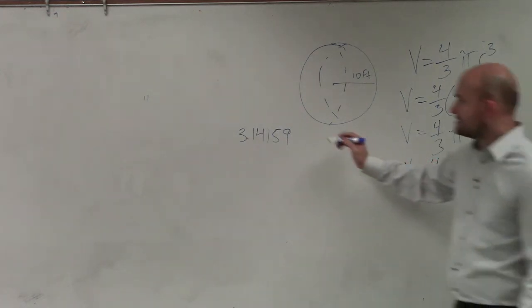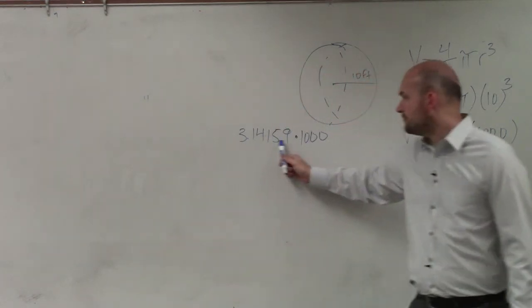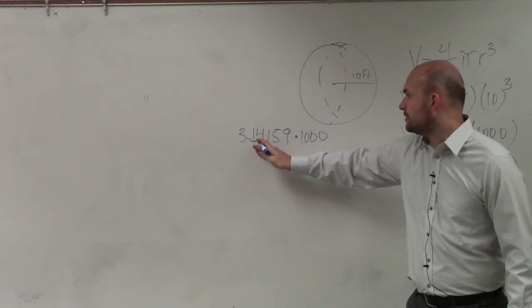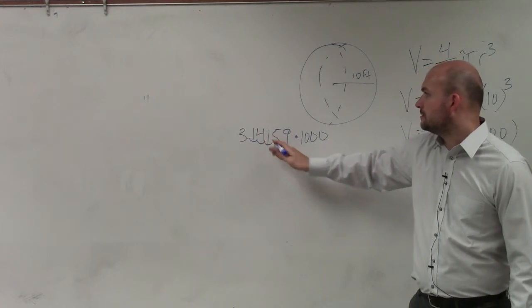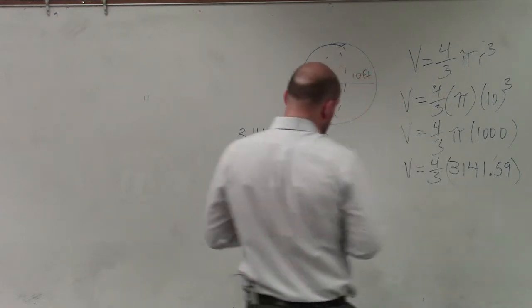All right. So all I did, guys, if you have 3.14 times 1,000, you just move the decimal point over. OK? So now I just multiply that by 4/3.